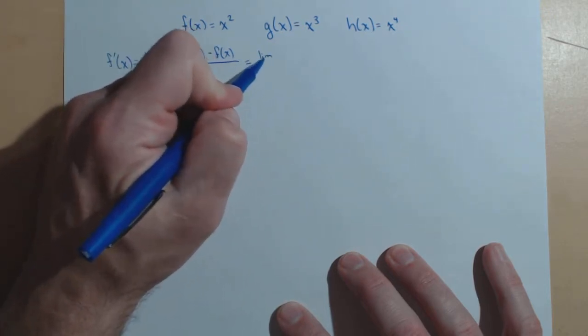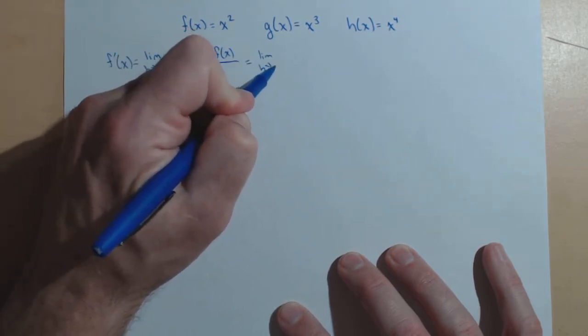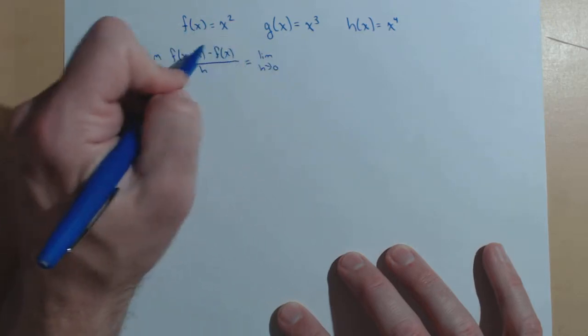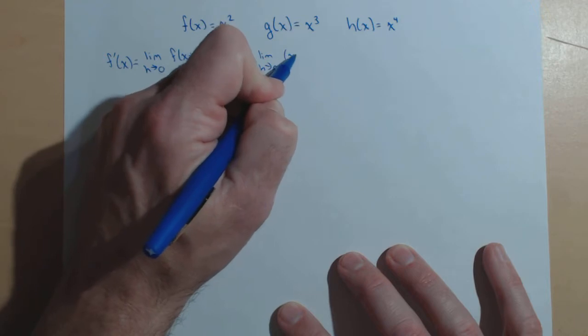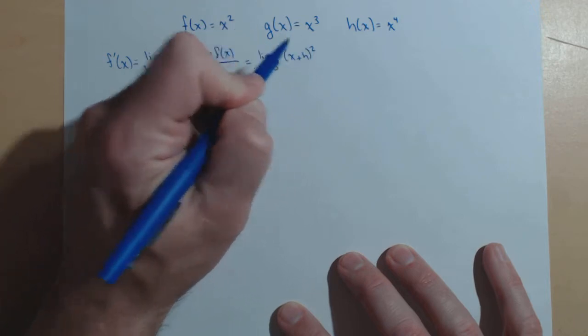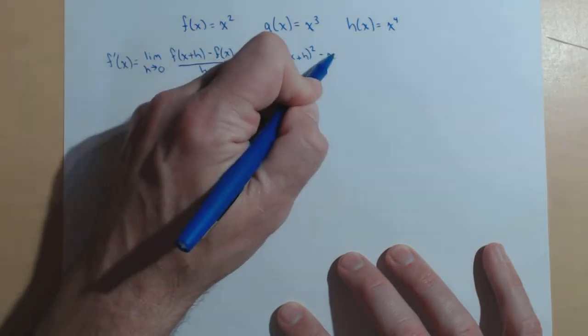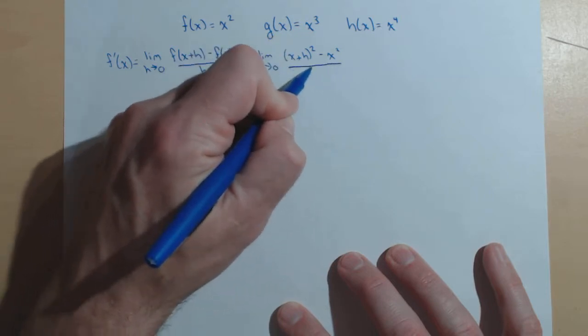Now, we need to put in our function f for this. Limit as h goes to zero, which will be f of x plus h. This means we're putting x plus h in for x: x plus h, the quantity squared, minus f of x, which is x squared, all over h.